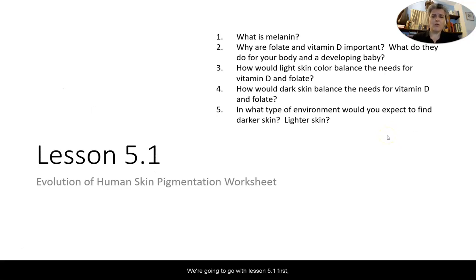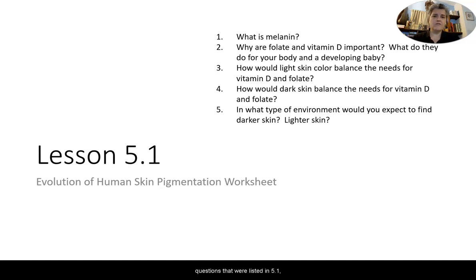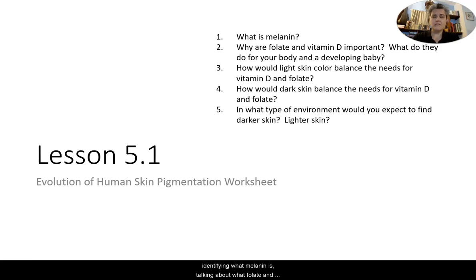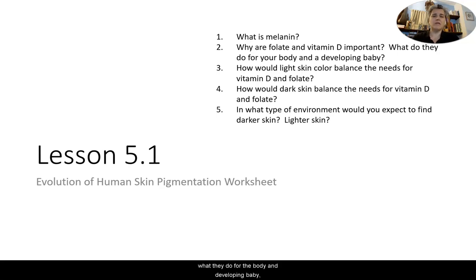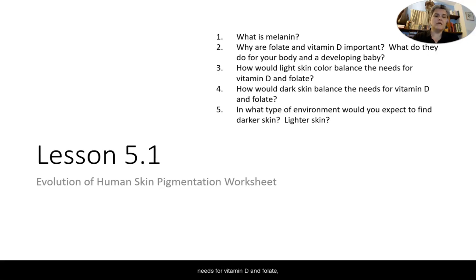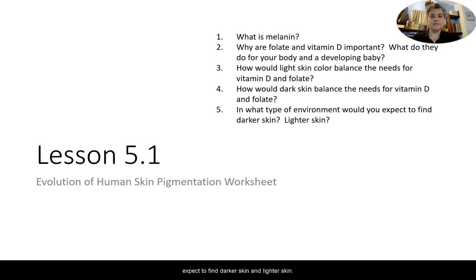We're going to go with Lesson 5.1 first, which is the evolution of human skin pigmentation worksheet. You can see the five questions listed in 5.1, which are very tightly related to the goals I just reviewed: identifying what melanin is, talking about what folate and vitamin D are and why they're important, what they do for the body and a developing baby, how light and dark skin color each balance the needs for vitamin D and folate, and the type of environment where we'd expect to find darker or lighter skin.